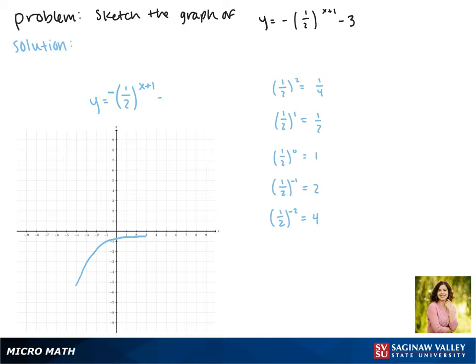Lastly, we have a vertical shift. Since we're subtracting 3, that means our function moves down three spaces, so that now it passes through the point (-1, -4).